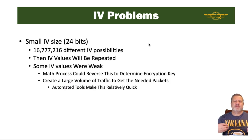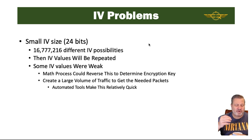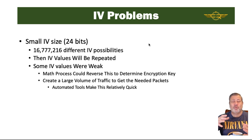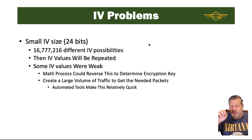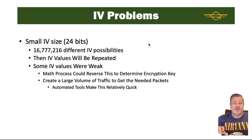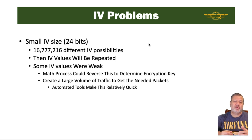The IV is 24 bits long, giving about 16,777,216 different IV possibilities. Once you go through that number, an IV will be repeated. Some IV values are actually weaker than others, and we can use a mathematical process to reverse this and determine the encryption key. All we need is to push a large volume of data across the wireless network to find repeating IVs and figure out the encryption key.